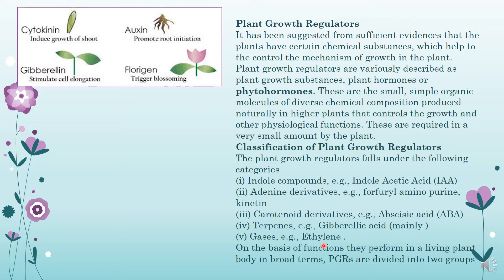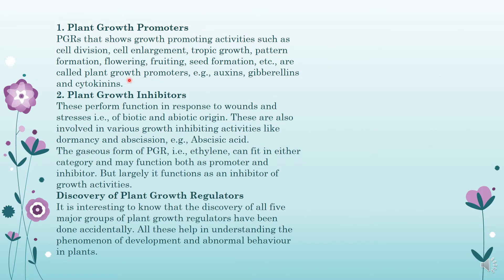There are five main broad categories of the hormones: kinetin that is cytokinin, carotenoid derivatives that is abscisic acid, gibberellic acid, and ethylene. So these are the five main hormones and they will be categorized into different types on the basis of their function. We will classify these five types of plant growth regulators into two main headings further depending upon the type of functioning: plant growth promoters and plant growth inhibitors.